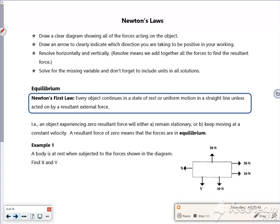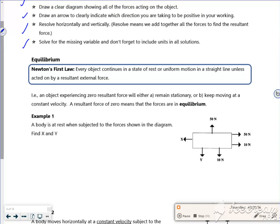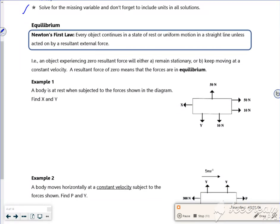So it says draw a clear diagram showing all the forces, draw an arrow to clearly indicate when you're taking a positive, resolve horizontally, vertically, parallel and perpendicular, and solve. So equilibrium - every object continues in a state of rest or uniform motion in a straight line unless acted on by a resultant external force.